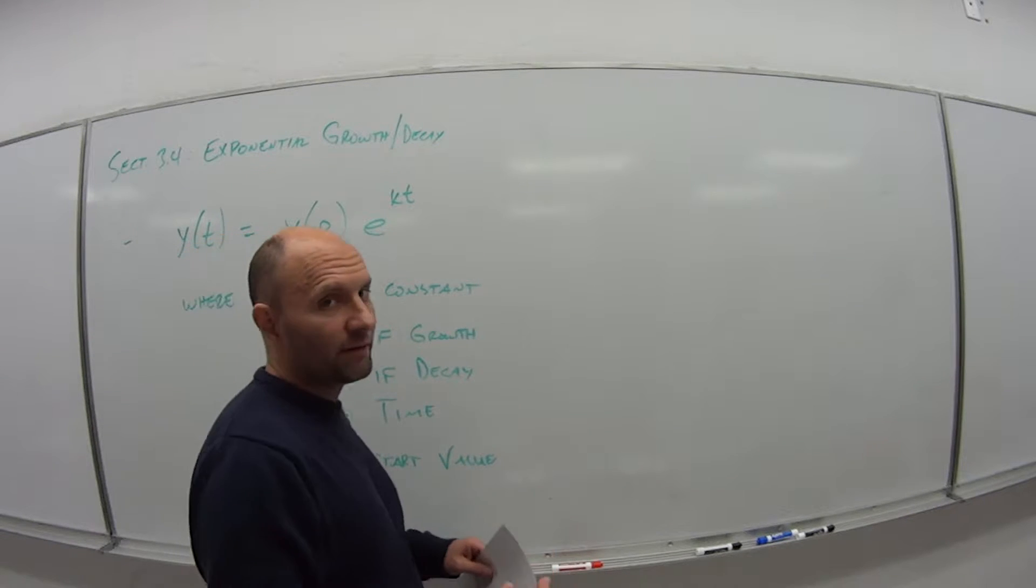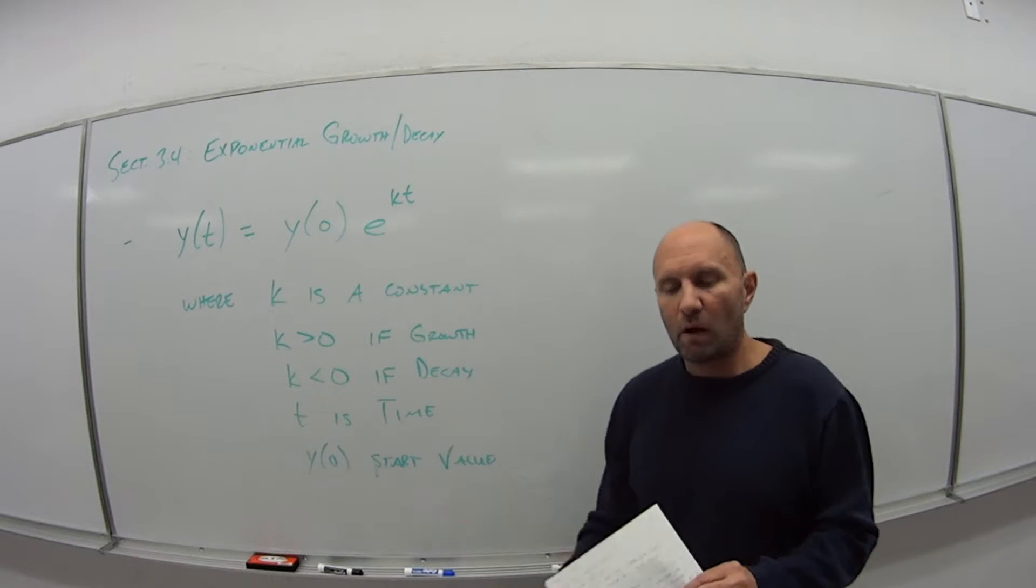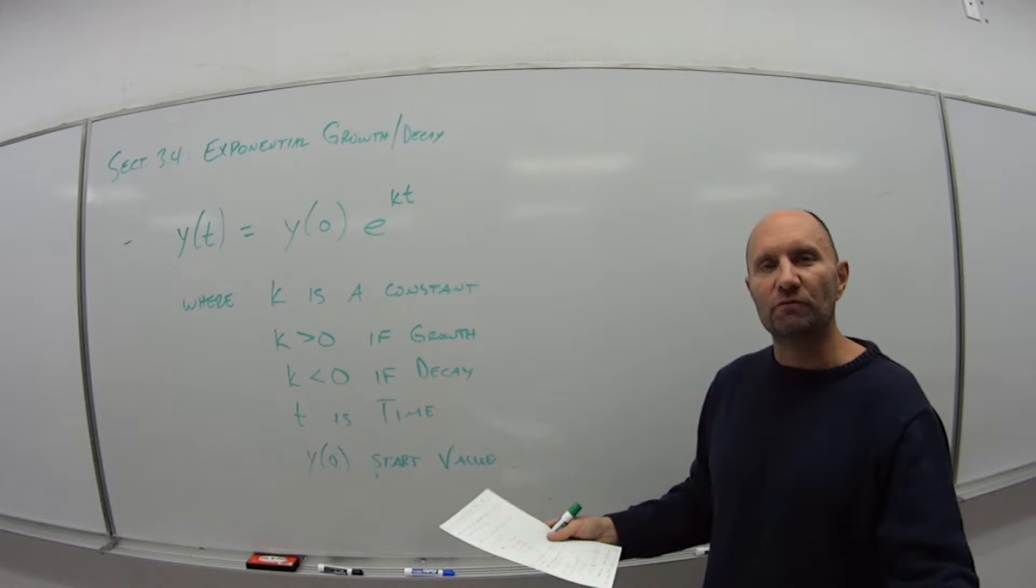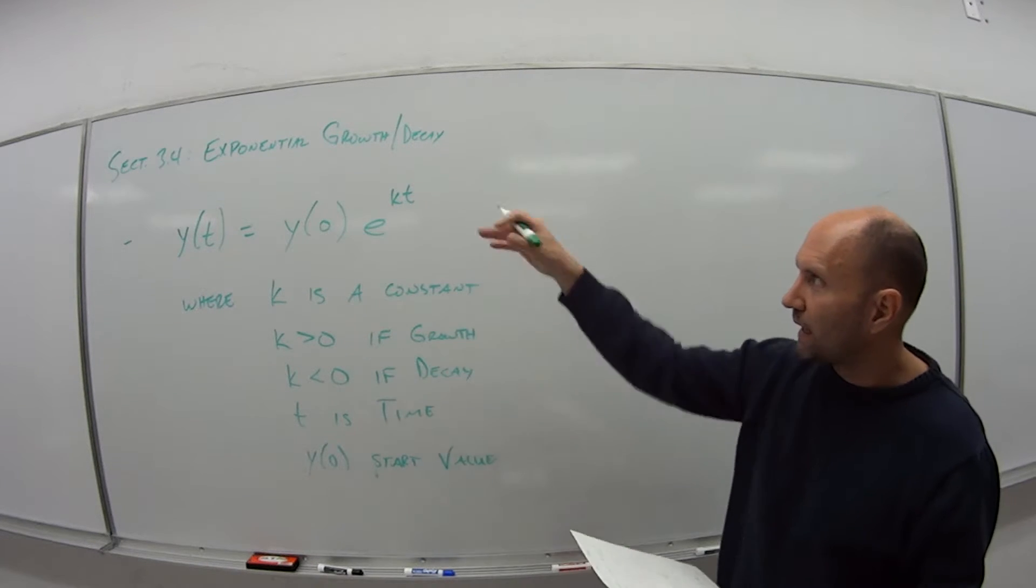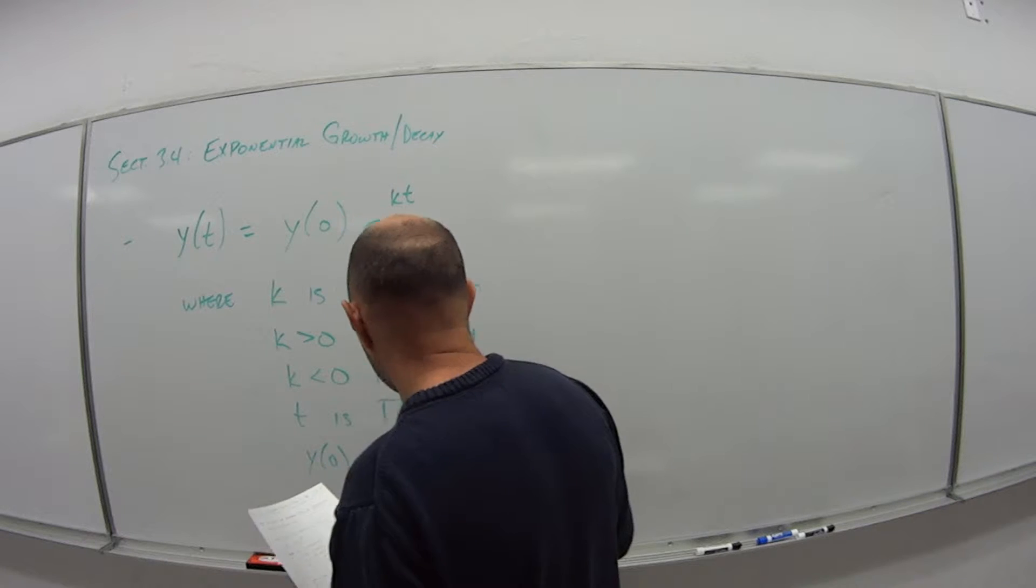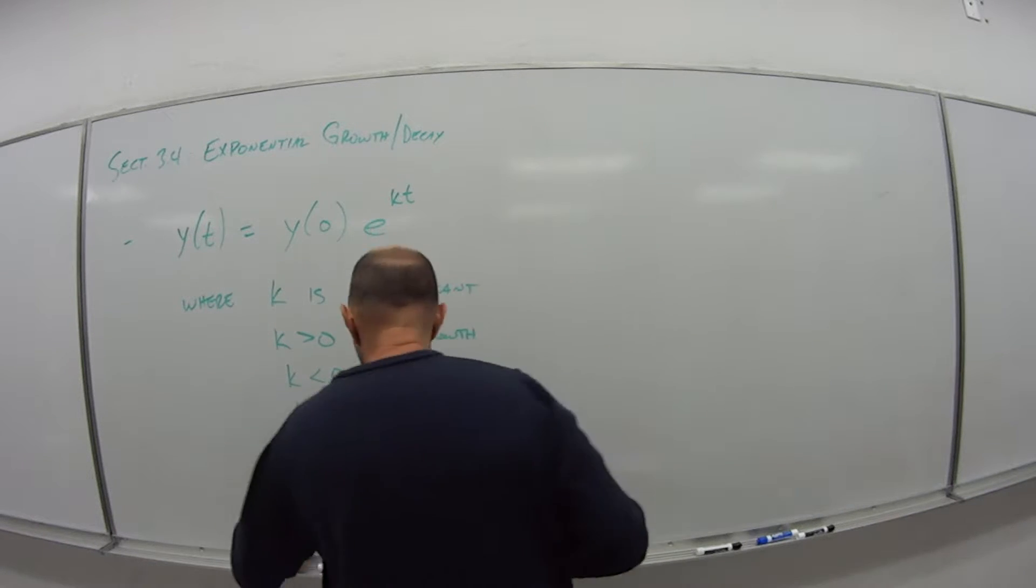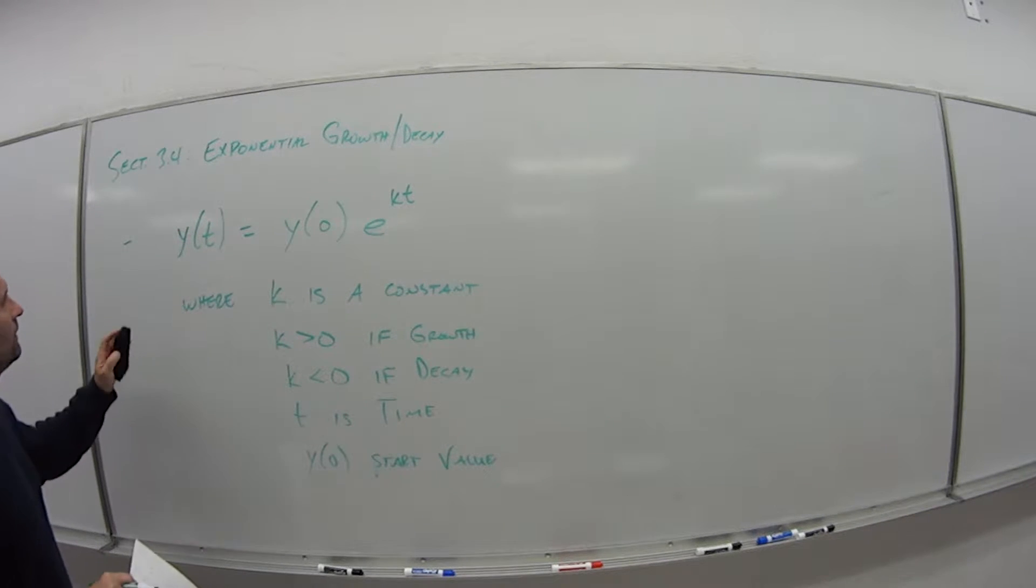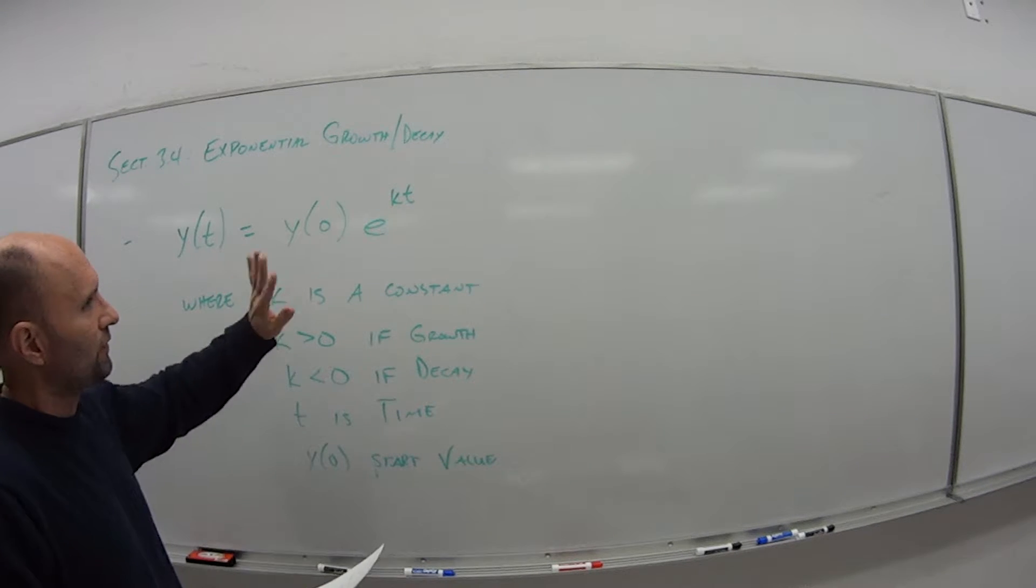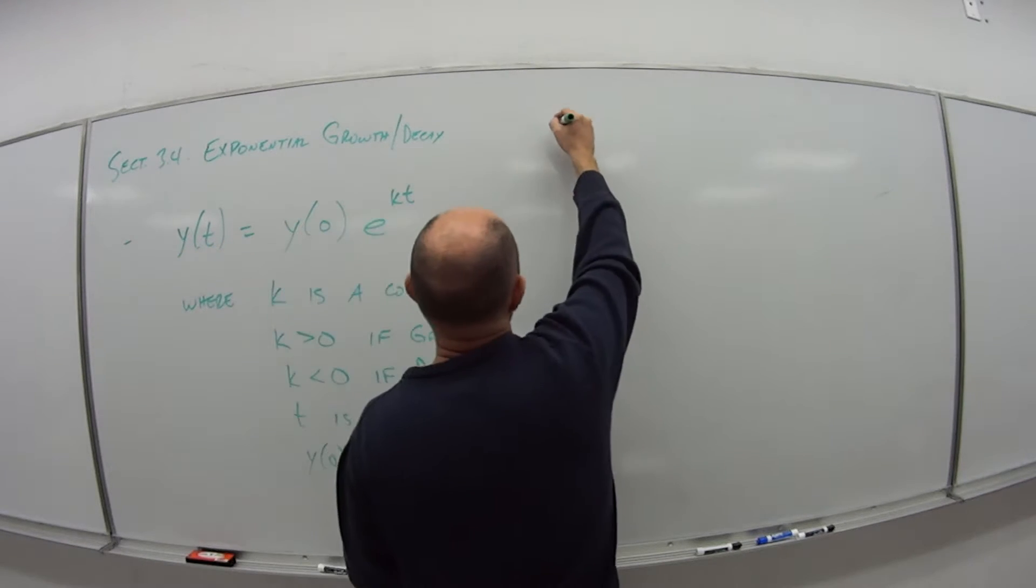So as we'll see in this example, if I'm talking about population growth, I have to know what was the original population value. And then from there, I can figure out an exponential growth formula. So let's look at an example. I'll leave this for the time being.